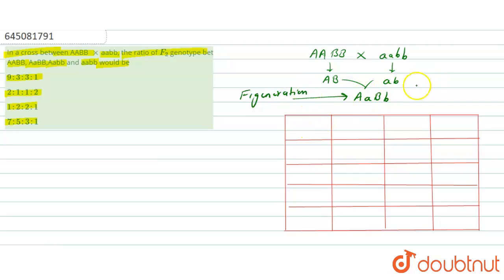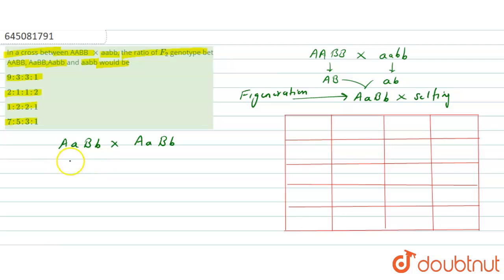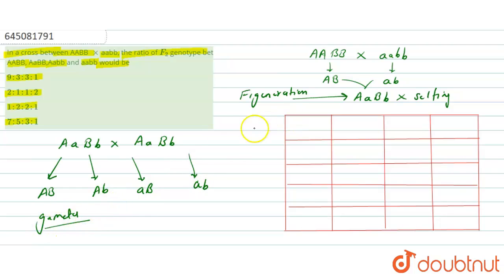Now, for producing the F2 generation, here is the selfing of the F1 generation. During selfing, when AaBb crosses with AaBb, four types of gametes are produced: AB, Ab, aB, and ab.